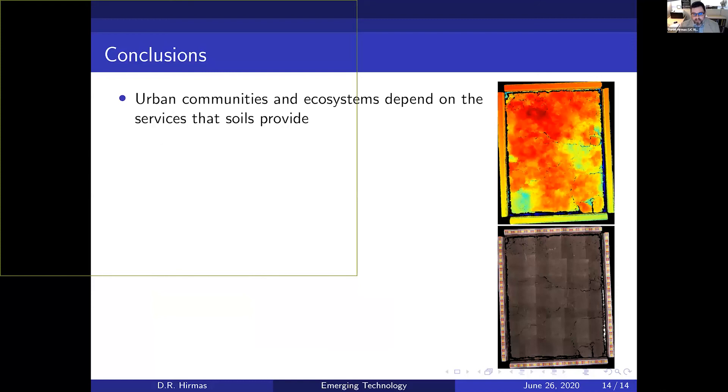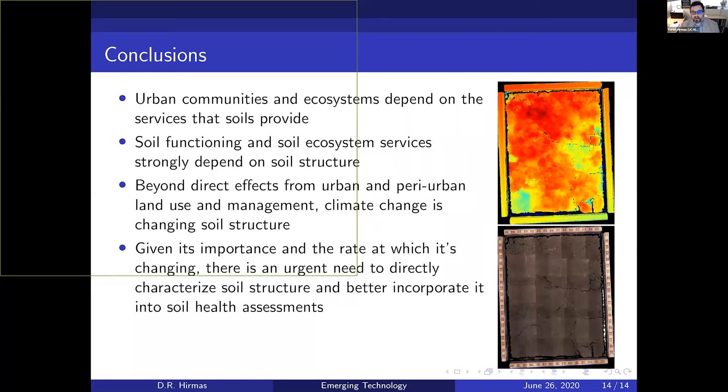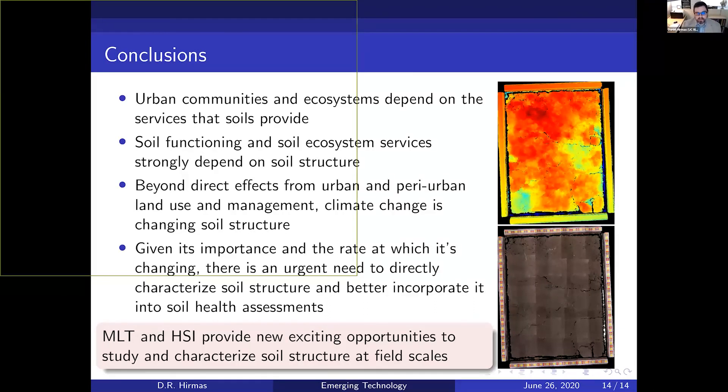In conclusion, urban communities and ecosystems depend on the services that soils provide. Soil functioning and ecosystem services strongly depend on soil structure. It's a topic I'm very fascinated with and spend a lot of time studying. It's such a foundational topic, but it's not considered oftentimes in assessments of soil health, or at least not directly. Beyond the direct effects of what we do to the land through land use and management in urban environments, climate change is also changing structure. Given its importance as a foundational property and the rate at which it's changing, there's really an urgent need to directly characterize soil structure and incorporate it into urban soil health assessments. MLT and HSI are two new exciting opportunities to study and characterize soil structure at field scales and at resolutions necessary to resolve soil structure across a range of scales.